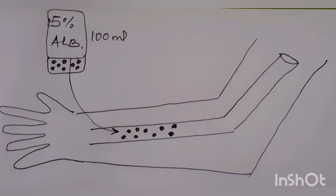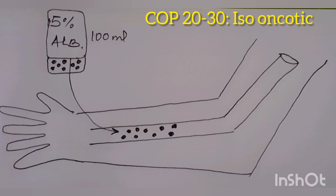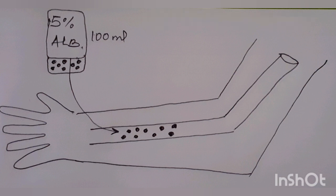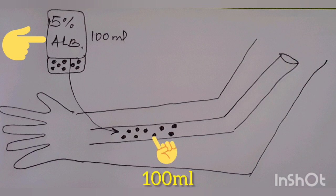Colloidal fluids with a COP — that is, colloid osmotic pressure — of 20 to 30 mmHg are considered iso-oncotic fluids because they have the same COP as that of normal plasma COP, that is 28 mmHg. When we administer iso-oncotic fluids, they produce increments in plasma volume roughly equivalent to the infusate volume — if 100 ml is infused, plasma volume increases by 100 ml.